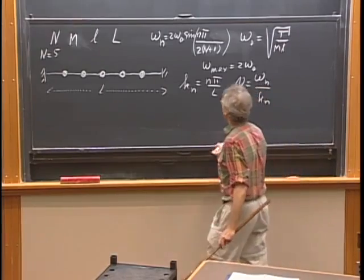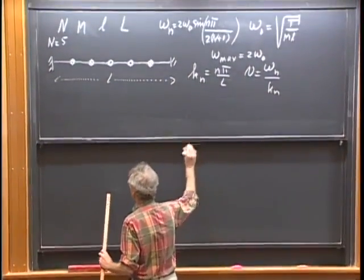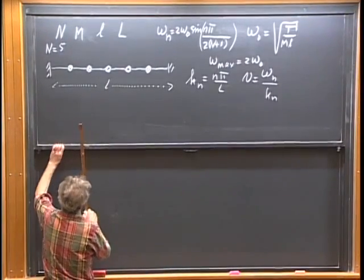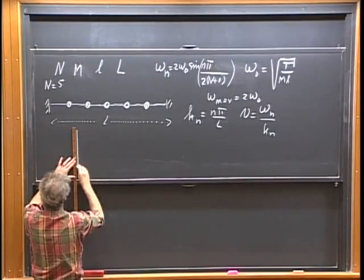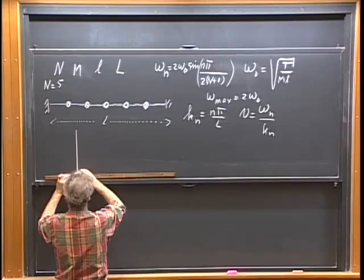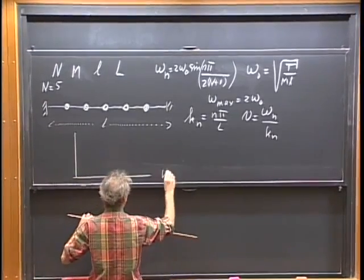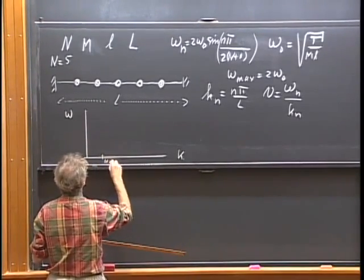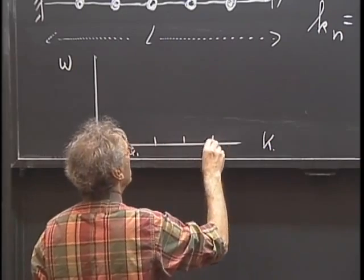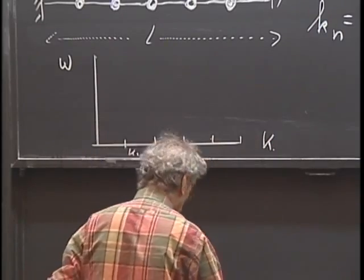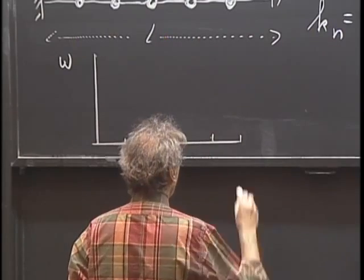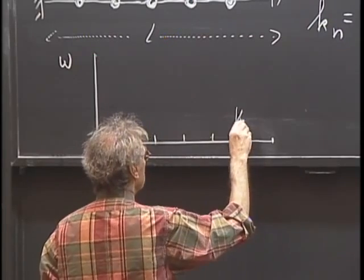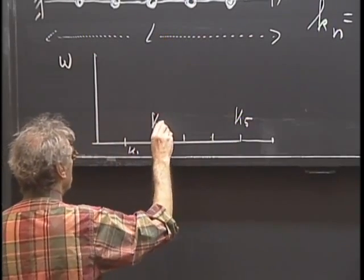A very nice way of seeing that is to make a plot of omega versus k. The vertical axis is omega and the horizontal is k. We have k₁, k₂, k₃, k₄, k₅ along the k axis. The end of the string corresponds to k₅, and the maximum value of omega is 2 omega₀.